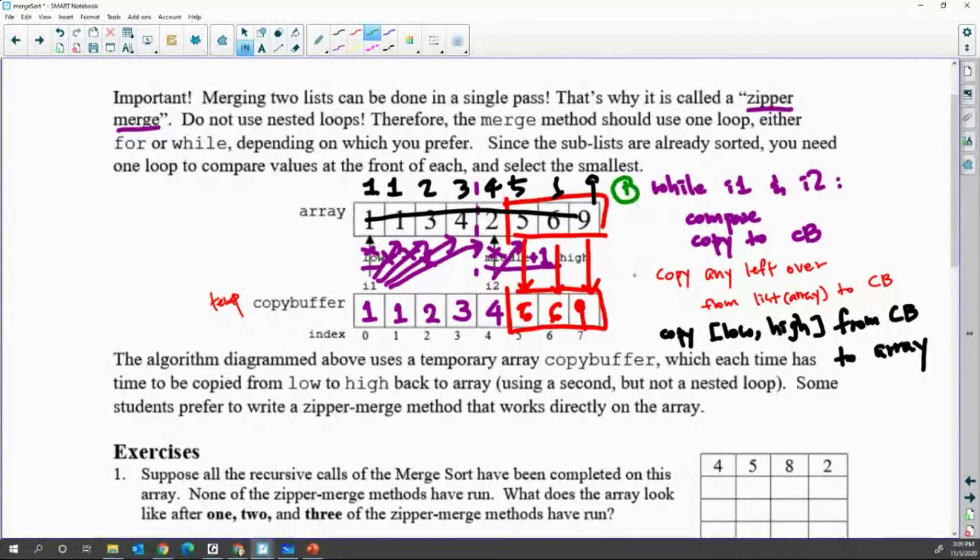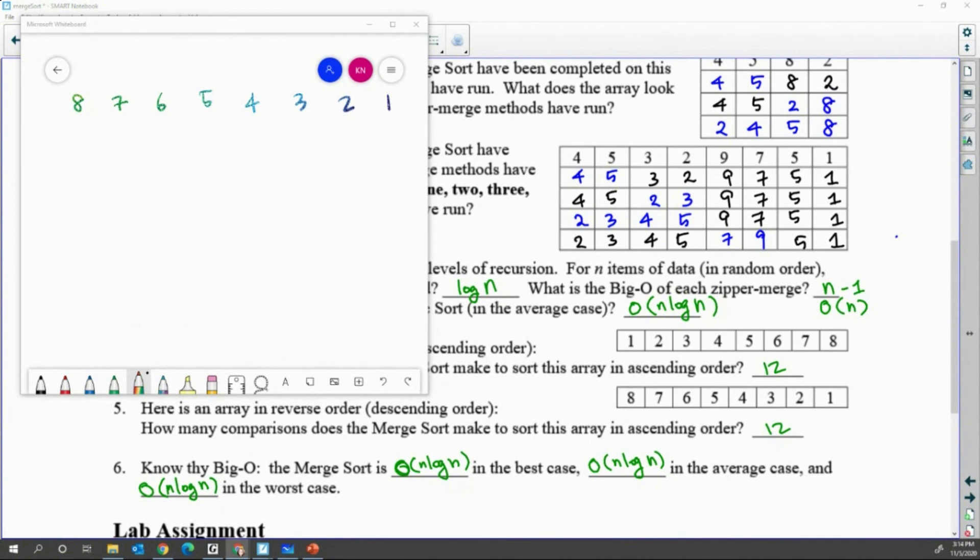And numbering 1, 2, 3. The rest of them, I want to just check the answers. And only number 5, I'm going to go over here. How many comparisons as a total? I'm going to just trace one by one.